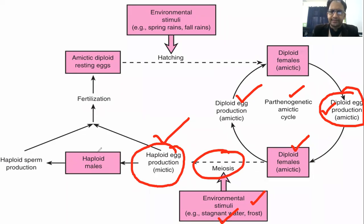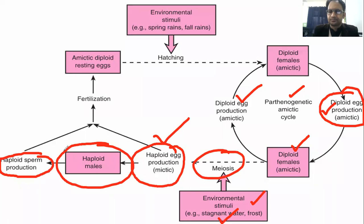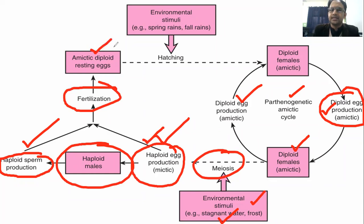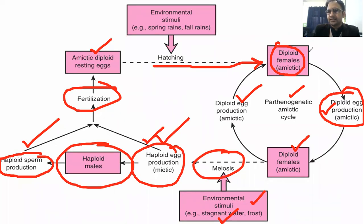If the haploid eggs grow without fertilization, they will produce haploid males. These males produce sperm through mitosis. If the sperm fertilizes a haploid egg in the environment, they can grow to form dormant diploid eggs again, which ultimately hatch into diploid females, completing the mictic life cycle of rotifers.